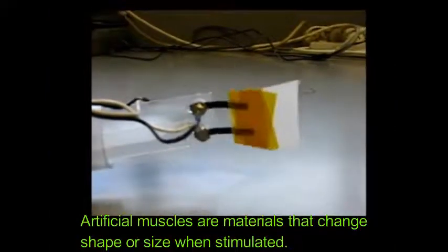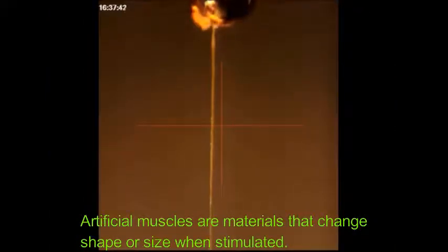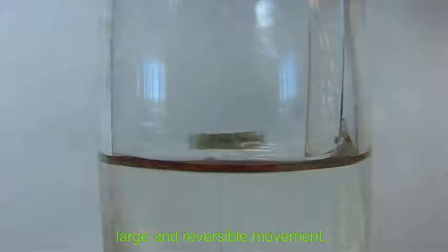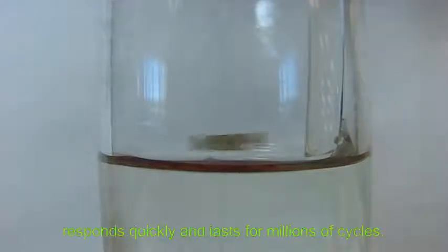Artificial muscles are materials that change shape or size when stimulated. The ideal artificial muscle generates large and reversible movement, high mechanical work output, responds quickly and lasts for millions of cycles.